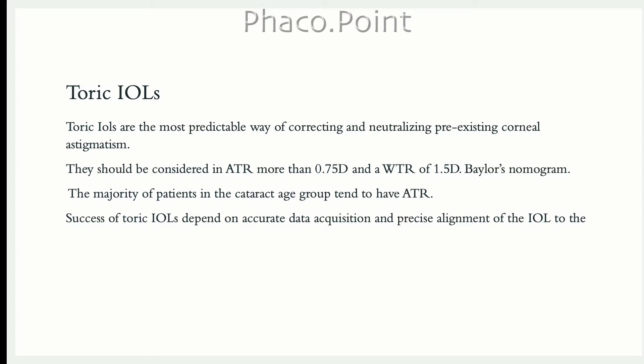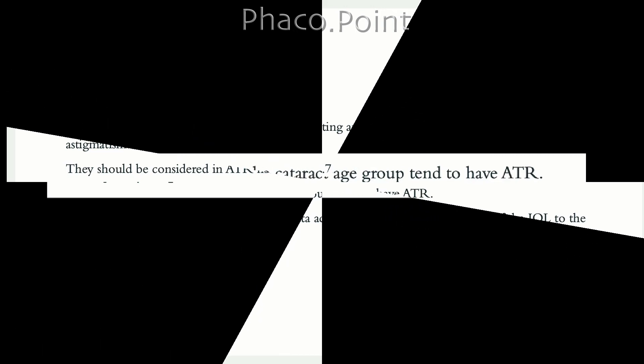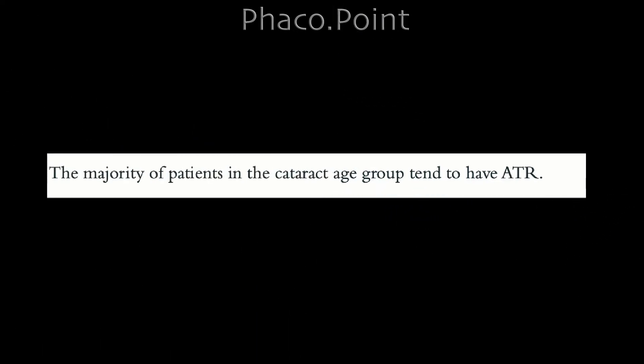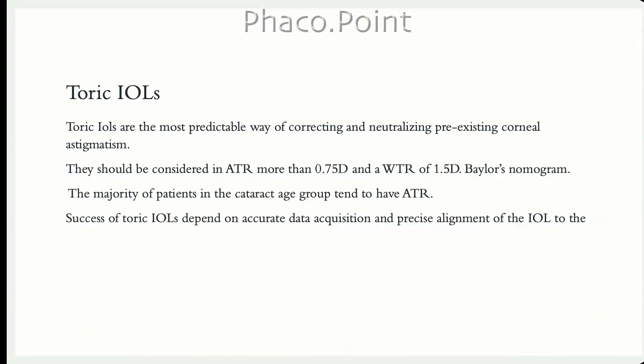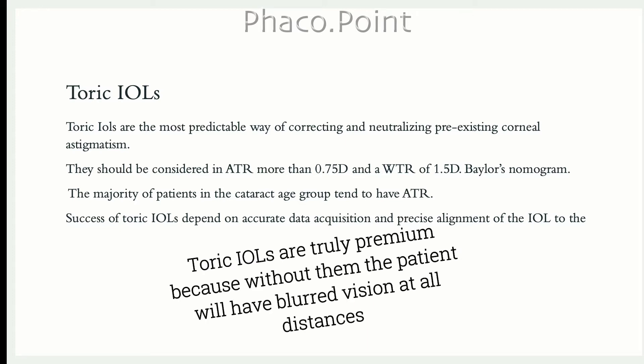It has been estimated that about 30 percent of the cataract population have pre-existing corneal astigmatism of one diopter or more, and since the majority is of the against-the-rule variety, we tend to offer toric intraocular lenses to a greater subset of cataract patients than ever before. Unlike other premium intraocular lenses, toric IOLs are truly unique because failure to implant them when indicated will affect the unaided visual quality at all distances.